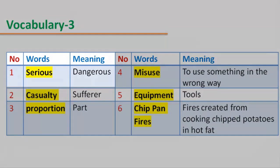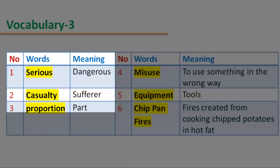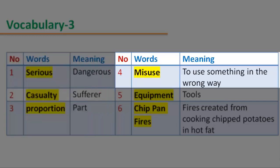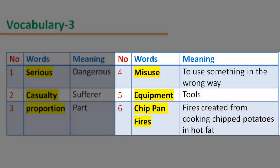Vocabulary 3. Number 1: Word 'serious', meaning dangerous. Number 2: Word 'casualty', meaning sufferer. Number 3: Word 'proportion', meaning part. Number 4: Word 'misused', meaning to use something in the wrong way. Number 5: Word 'equipment', meaning tools. Number 6: Word 'chip pan fires', meaning fires created from cooking chipped potatoes in hot fat.